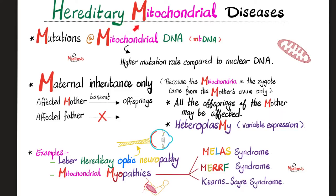Now, hereditary mitochondrial diseases. The problem is a mutation in the mitochondrial DNA. Mitochondrial DNA has a higher mutation rate compared to nuclear DNA, because the proofreading mechanisms are more robust in the nuclear DNA than in the mitochondrial DNA. The mitochondrial DNA is more vulnerable to mutations and defects, which is exactly what happens in these diseases.